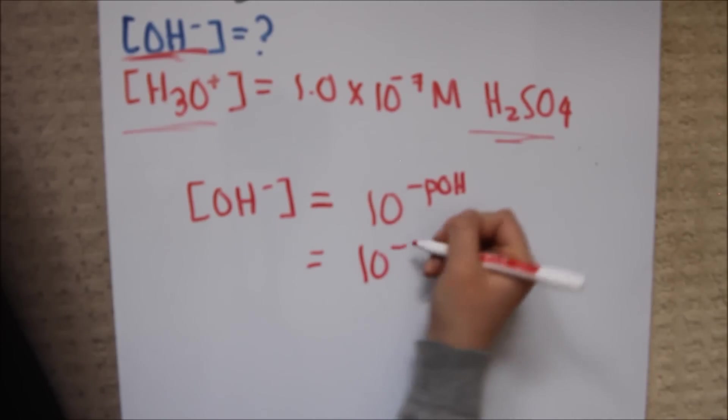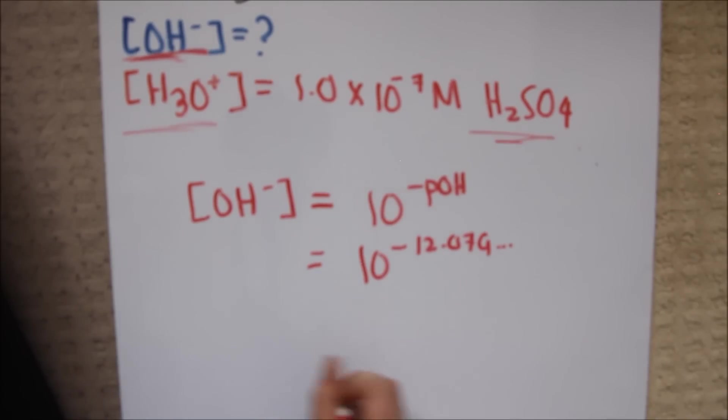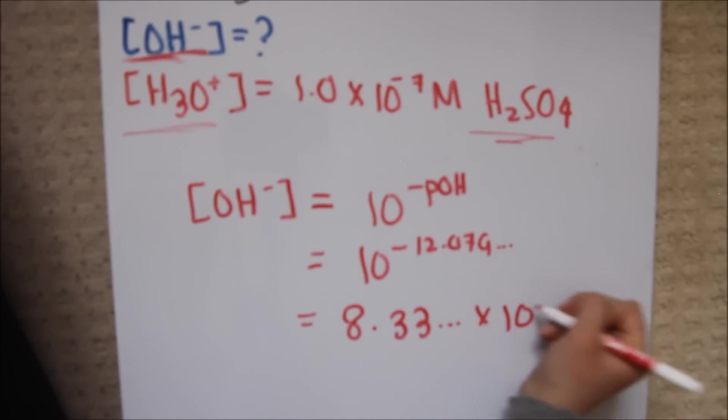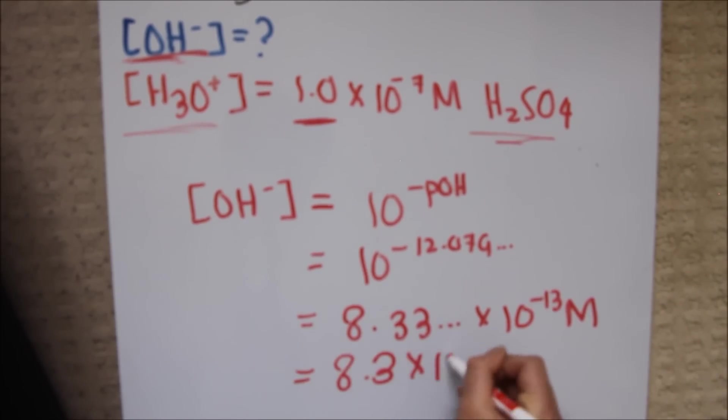10 to the negative 12.079, again, keeping all my digits, is equal to 8.33 repeating times 10 to the negative 13 moles per liter. That should give us a final answer of 8.3 times 10 to the negative 13 moles per liter.